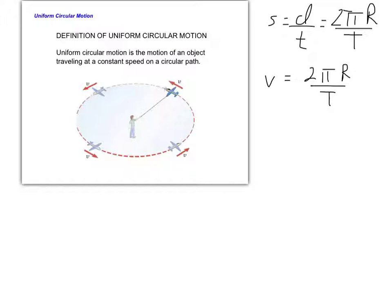Because we've identified that the velocity is changing, we must also agree that there is an acceleration, since acceleration is simply a change in velocity divided by a change in time. It was easy to calculate acceleration in kinematics with x and y dimensions, but how do we account for a change in direction? That's the big question.